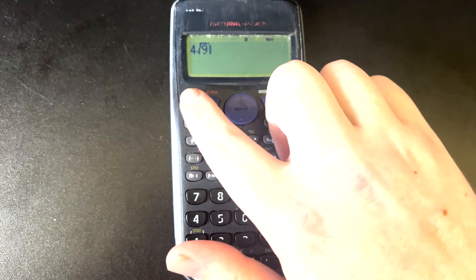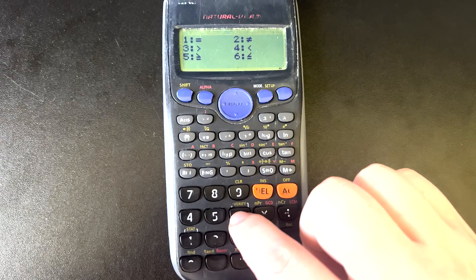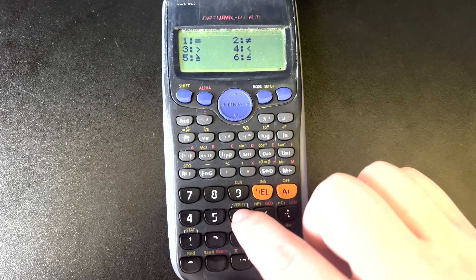But to use our calculator to check this, we'll press shift, then number six down here to bring up the menu for the different symbols that we can use to verify with.